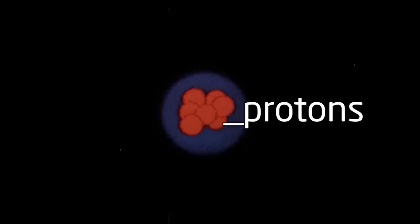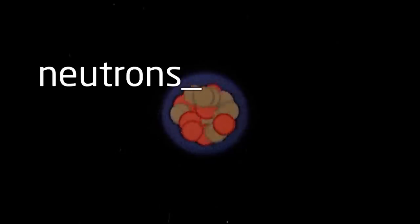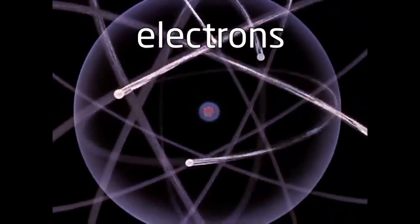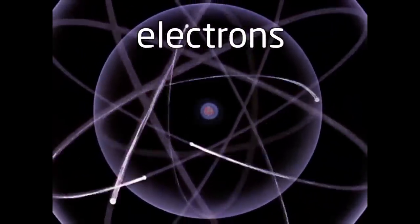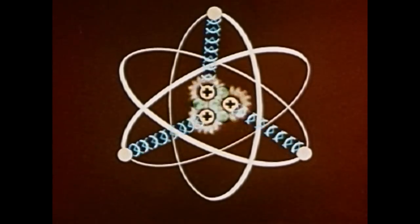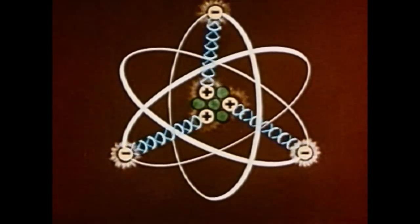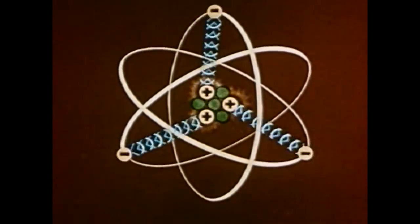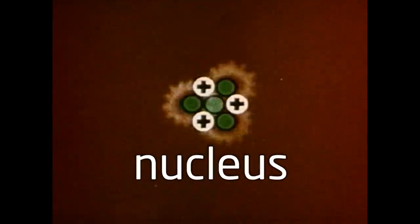A proton has a positive electrical charge. A neutron is electrically neutral, and an electron has an equal negative electrical charge. Since every atom is electrically neutral, the number of protons in the nucleus must equal the number of electrons far away in the electron cloud. The protons and neutrons together make up the nucleus of the atom.